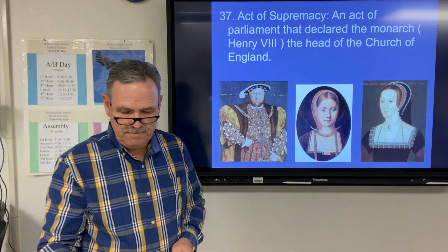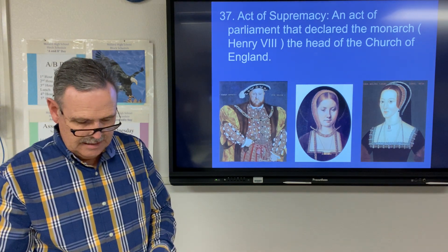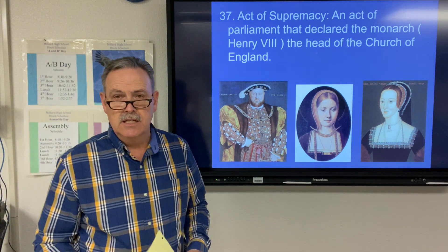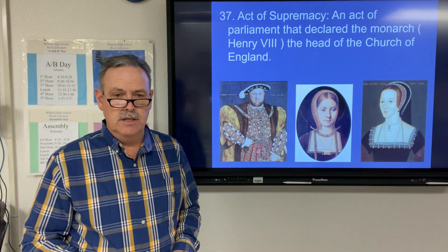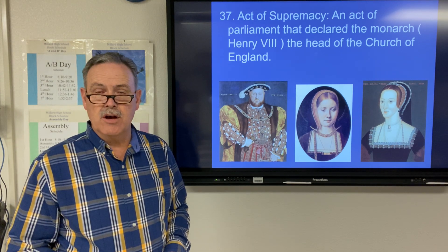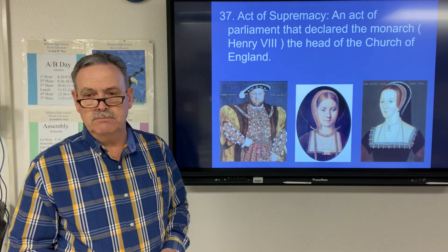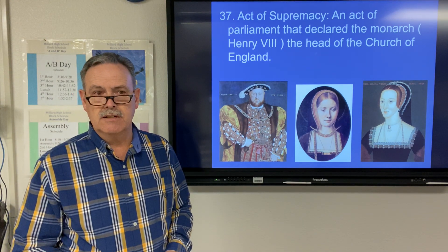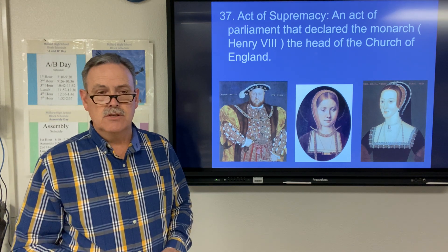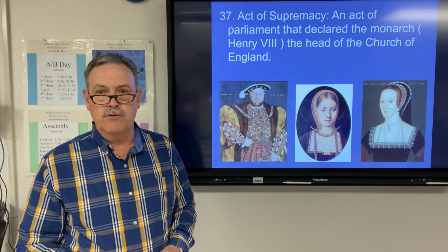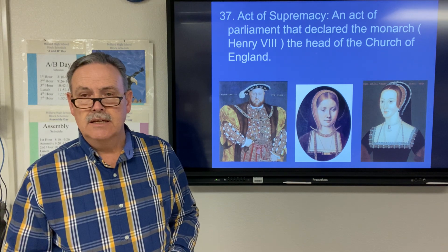The Act of Supremacy was an act of Parliament that declared the monarchy — Henry VIII — to be the head of the Church of England, and it renounced papal authority. Within the Catholic Church, you can't get a divorce, and Henry wanted a divorce from Catherine of Aragon because she hadn't given him a son. The two of them did have a daughter, Mary I. So Henry had Parliament make him the head of the Church of England, which made him free to divorce. He then found another woman in his court that he liked — Anne Boleyn.